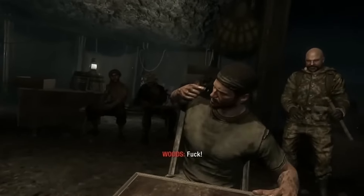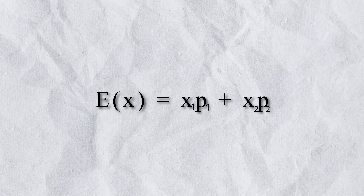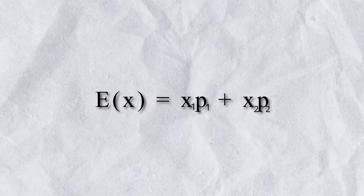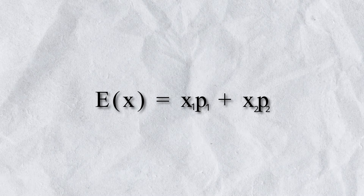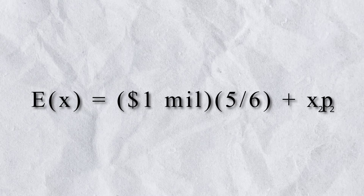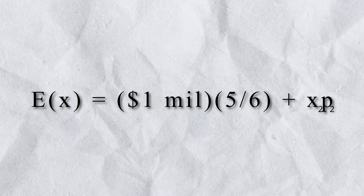Now let's apply this to our game of Russian Roulette. There are only two outcomes: you survive and win the million dollars with a 5 in 6 chance, or you lose with a 1 in 6 chance.